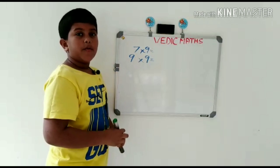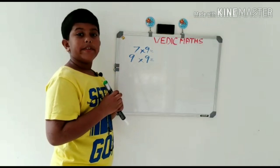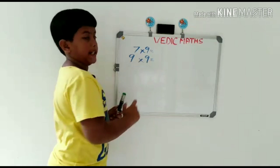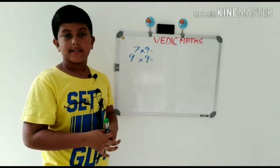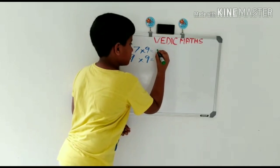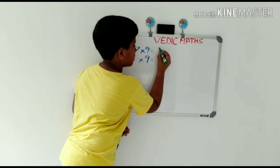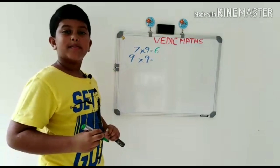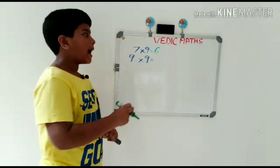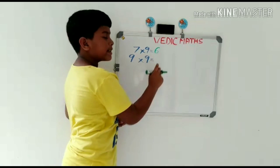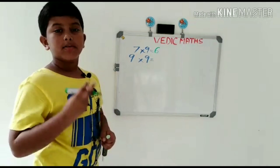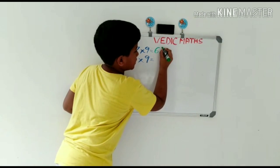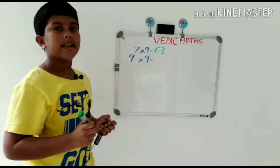7 × 9. First, we should write the number 1 less than 7, that is 6. And what number should be added to 6 to get the number 9? That's 3. So the answer is 63.